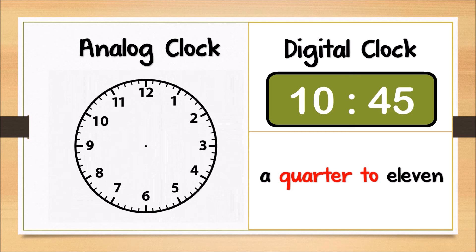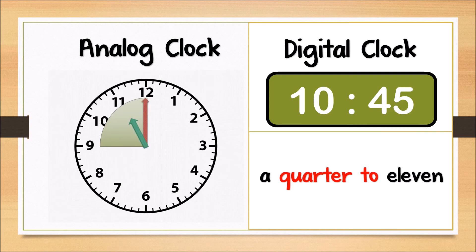Apa yang dimaksudkan dengan a quarter to 11? A quarter to 11 maksudnya suku jam sebelum pukul 11. 10.45 ni, kita ada 15 minit lagi untuk ke pukul 11. Jadi, a quarter to 11 bermaksud 10.45. Lihat pada muka jam. Ini 10.45. Kalau jarum minit itu bergerak 15 minit sahaja lagi, dia akan jadi tepat pada pukul 11. Jadi, 10.45 dipanggil a quarter to 11.